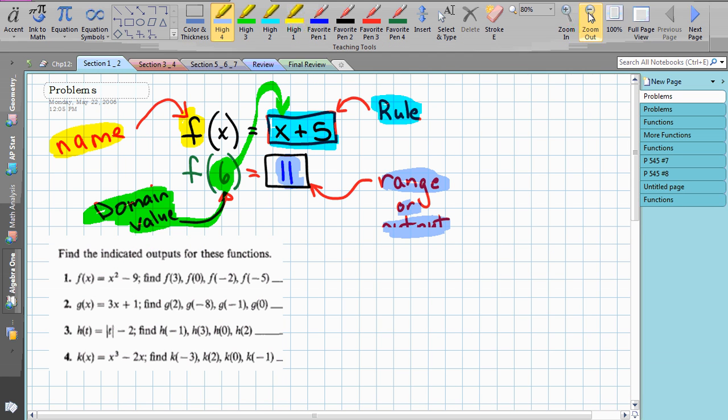So notice in these four examples, what's going on? f is the name of the function, g is the name of the function, so is h, and so is k. These are four different names of different functions. And notice, they all have different rules. This is the rule of f, this is the rule of g, this is the rule of h, and this is the rule for k.